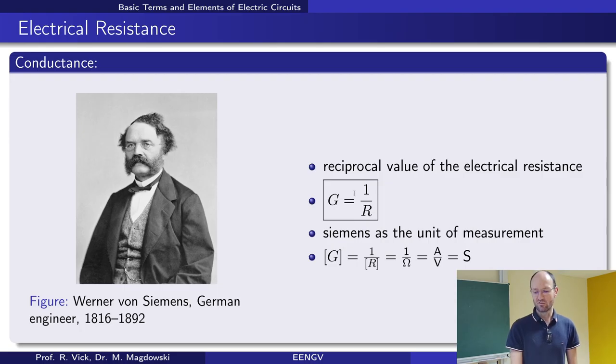So now we can take the inverse of the resistance, or the reciprocal value of the resistance, and this is what we call conductance. So 1 over R, and the unit of this conductance is 1 over ohm, or ampere per volt, and this is called Siemens after the German engineer Werner von Siemens, who is also the name patron of our building, the electric engineering building. Building 9 is called the Siemens building.